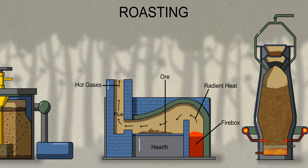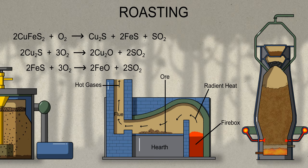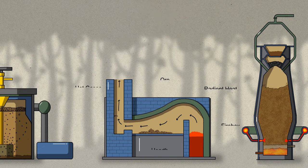Step 4 is roasting. This is where the chemical reaction starts. In roasting, the concentrated ore is heated in a reverberatory furnace by passing excess air. During roasting, moisture and volatile impurities like sulfur, phosphorus, and arsenic are removed as volatile oxides.